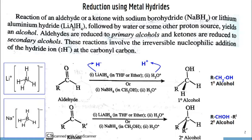In this reaction, an aldehyde or ketone treated with Sodium Borohydride or Lithium Aluminium Hydride, followed by water or another proton source, yields an alcohol. This involves two steps: first, treat the aldehyde or ketone with the metal hydride, which provides a hydride ion that acts as the nucleophile and adds at the carbonyl carbon. Then treat it with water to provide the H⁺ ion, completing the addition of H₂ across the aldehyde.